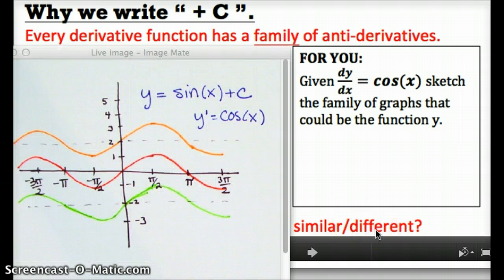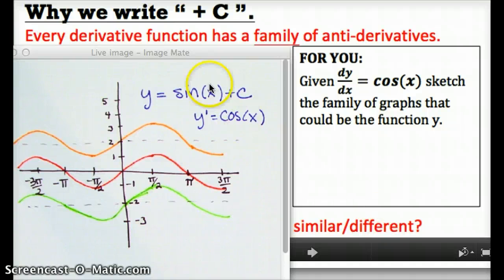This is what your answer maybe could have looked like. You probably realize that if the derivative function is cosine, the original function would be sine plus c. In other words, we take the original sine function, which could be one antiderivative, and we can find all the other antiderivatives by shifting that graph up or down by any number you want.